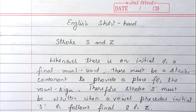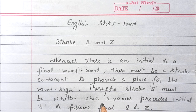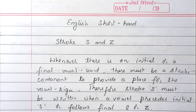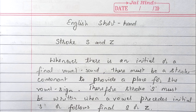Whenever there is an initial or final vowel sound, there must be a stroke consonant in order to place the vowel sign. When there is a vowel sign for S, we have to write the stroke in order to place the vowel. Therefore, stroke S must be written when a vowel precedes initial S, or follows final S or Z.